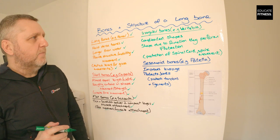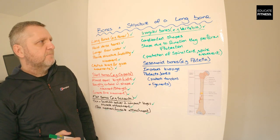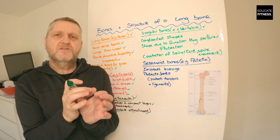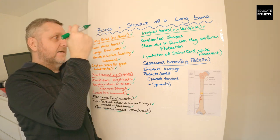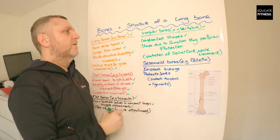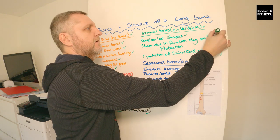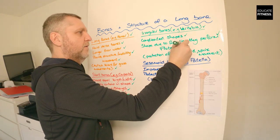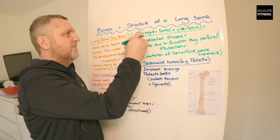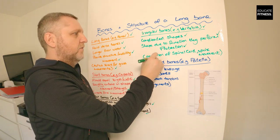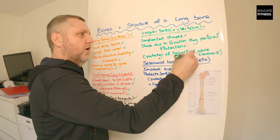Next we've got irregular bones, and the main example is the vertebra — the bones of the spine. Irregular bones have complicated shapes; just think of the vertebra and the combined bones in there. The shape is all about the function they perform, and that function is protection. Within the vertebra we have the spinal cord, so these irregular bones provide protection of the spinal cord, and they also allow the different types of spine movement.